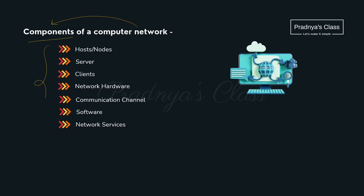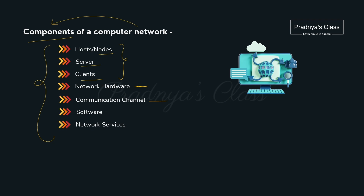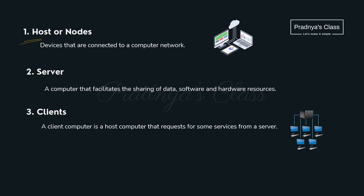Here is the list of different components. In the network, we will have different computers — the main one will be the server, and we have different clients. To connect computers to each other, we need hardware devices, and to pass information from one device to another, we need a communication channel. We may need some software also for networking, and finally there will be some services provided by the network.